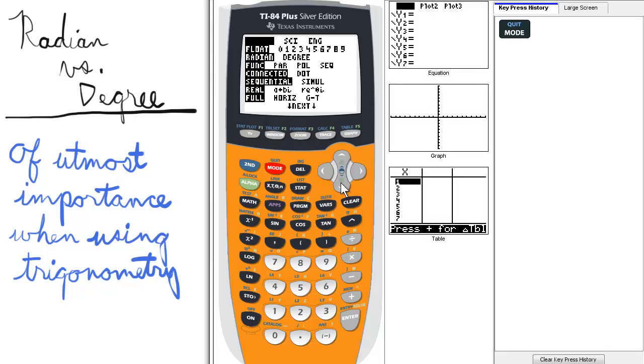Okay, going back to mode. On the third line, we get to choose between radian and degree calculation. This is really important for trig functions.